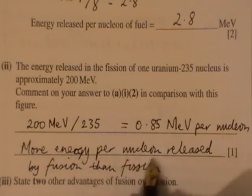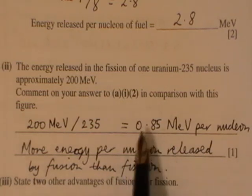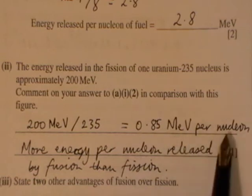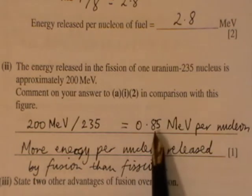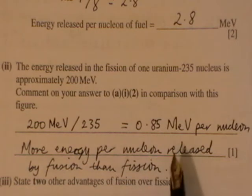It's important to get that to be mega electron volts per nucleon so that we can compare like with like. So, 0.85 versus 2.8, much less per nucleon released by fission rather than fusion.